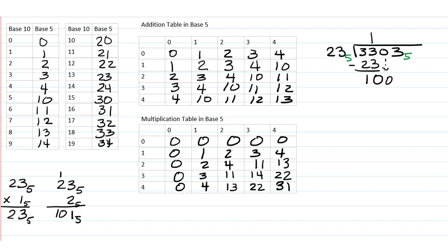Now 100 in base 5 is not the same as 100 as you would expect in base 10. So let's think about how many times 23 would go into 100. Well, we already found that 23 times 1 is 23, and 23 times 2 is 101, which is too big. So it actually only goes in once again. 1 times 23 is 23. And now we're going to subtract.